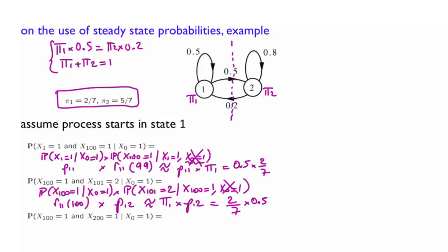Finally, let's calculate this third expression, where, again, we start at state 1. And now we are asking what is the probability that after time step 100, you are in 1, and 100 steps later, you are, again, in 1. We use the same trick as before. This is the probability that the first thing happened, and given that, the probability of the second one happened.